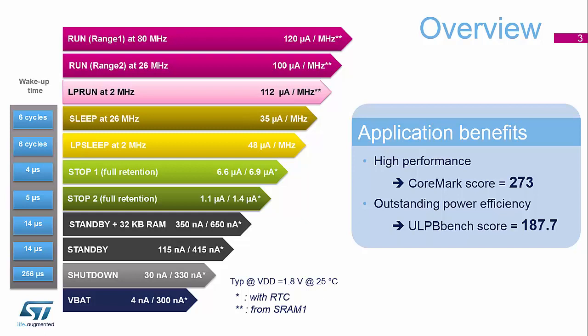Then we have low power run, which limits the clock speed down to two megahertz. Then we go into the various proper power-down modes: sleep, low power sleep, stop one, and stop two. Stop one and stop two still have full RAM data retention and maintain all the register configurations you've set. Then we have standby with 32 kilobytes of RAM maintained, and without it. For standby, you need to come back through the reset cycle because all peripheral register settings are lost at that point.